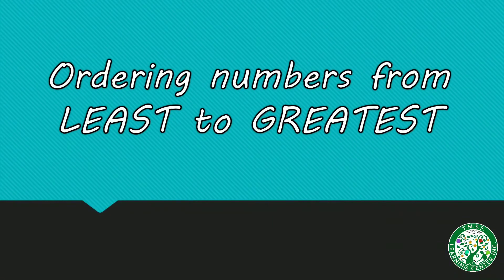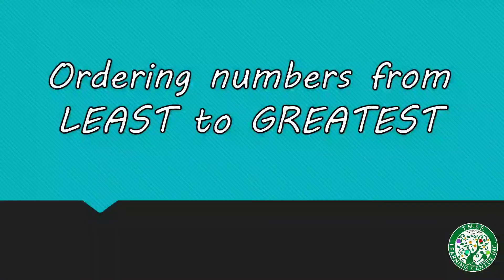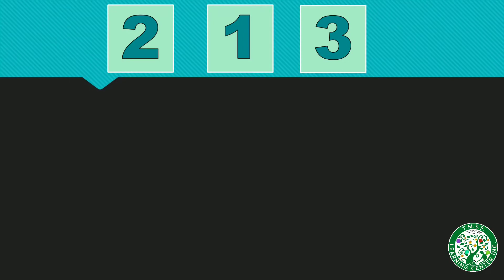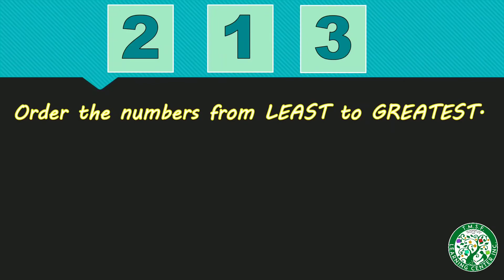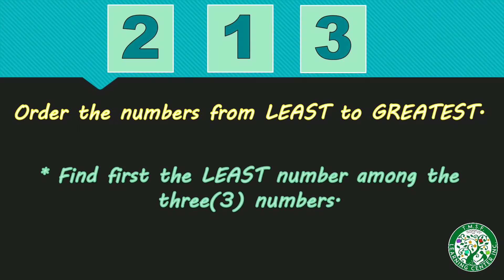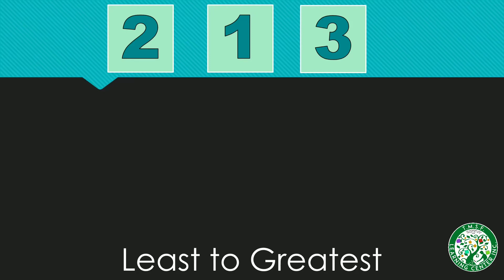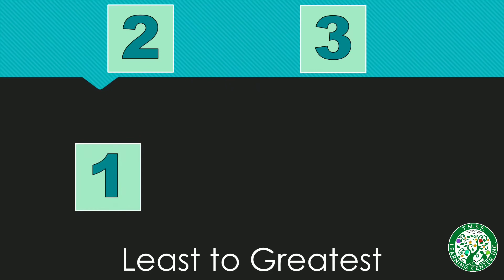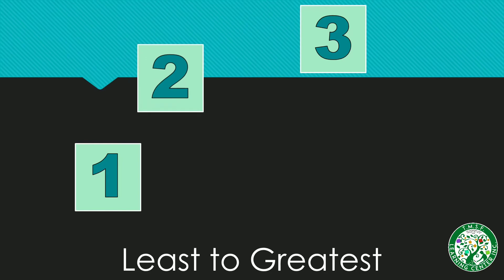Now we're going to learn ordering numbers from least to greatest. We have here numbers two, one, and three. We need to find first the least number among these three numbers. Let's order from least to greatest. The first one is one, because it's the least number. How about the second one? Number two. Okay.